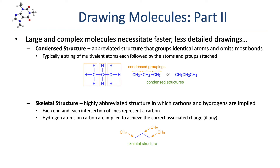By far the fastest way to draw any organic molecule is to use a skeletal structure — a highly abbreviated structure in which all the carbons and hydrogens are implied and not drawn explicitly. You simply draw a line representing each covalent bond between carbons; the end of each line and the intersection of any lines represents a carbon. Hydrogens are implied attached to each carbon.